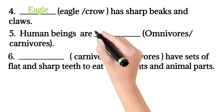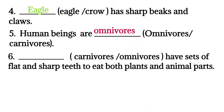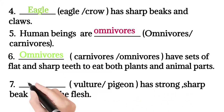Question five: human beings are carnivorous or omnivorous? Correct answer: omnivorous, because human beings eat veg and non-veg foods. Question six: carnivores or omnivores have sets of flat and sharp teeth to eat both plants and animal parts? Correct answer: omnivores, because they eat both plants and flesh of other animals.